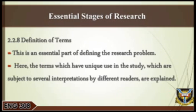Definition of terms. This is an essential part of defining the research problem. Here, terms which have unique use in the study and which are subject to several interpretations by different readers are explained. For example, 'food security' may mean securing food from angry criminals to some readers, or securing food from being contaminated to others, but it has a unique meaning in the field of food technology.